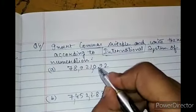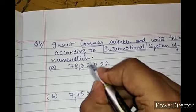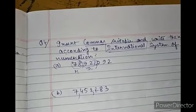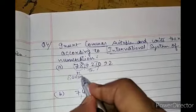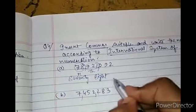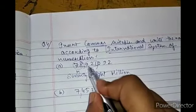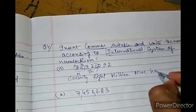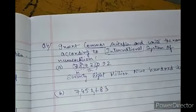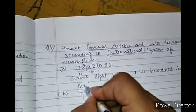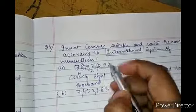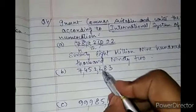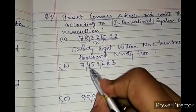So: ones, tens, hundreds, thousands, ten thousands, hundred thousands — this group is for thousands. The next group is for millions. We write: seventy-eight million, nine hundred twenty-one thousand, ninety-two.